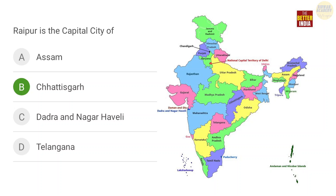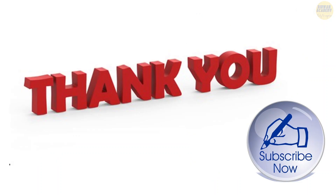Next question: Raipur is the capital city of which state — Assam, Chhattisgarh, Dadra and Nagar Haveli, or Telangana? The correct answer is option B — Raipur is the capital of Chhattisgarh. Chhattisgarh shares borders with Madhya Pradesh, Maharashtra, Telangana, Odisha, Jharkhand, and Uttar Pradesh.